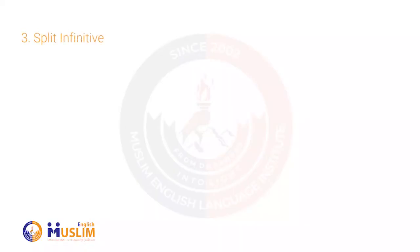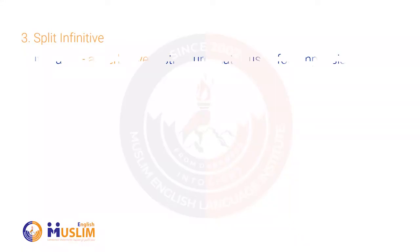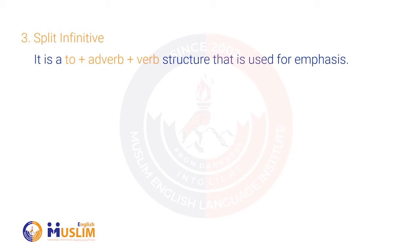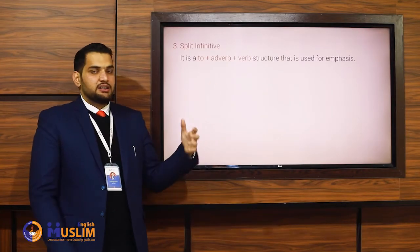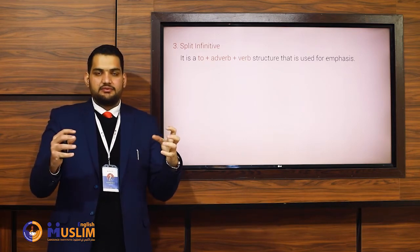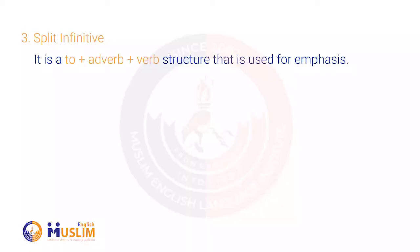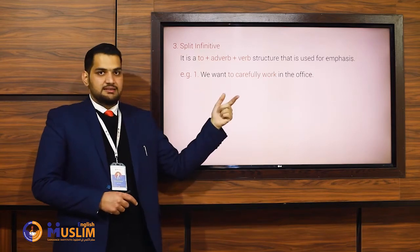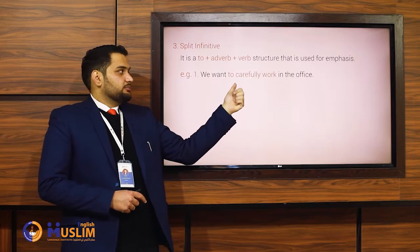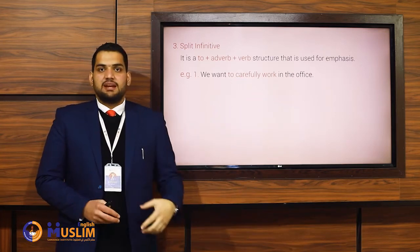Now let's talk about the third type of infinitive: split infinitive. The first is full infinitive, the second is bare infinitive, and here is the third. Split infinitive is a 'to + adverb + verb' structure that is used for emphasis. To split means to separate something. Whenever we separate the 'to' and the verb of a full infinitive and between them we use an adverb, that sort of infinitive is known as split infinitive. For example: 'We want to carefully work in the office.' The normal form is 'we want to work carefully in the office,' but for emphasis we say 'to carefully work.' So between 'to' and 'work' we have an adverb — that is a split infinitive.